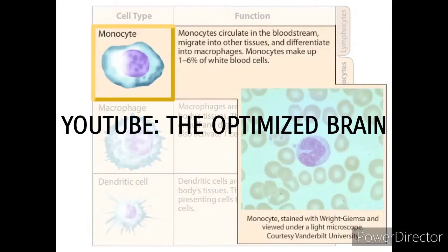Monocytes circulate in the bloodstream, migrate into other tissues, and differentiate into macrophages. Monocytes make up 1 to 6 percent of white blood cells.